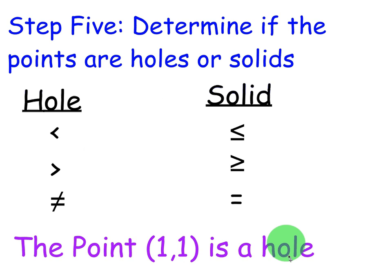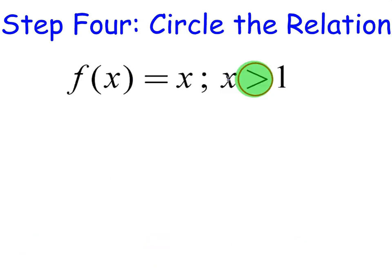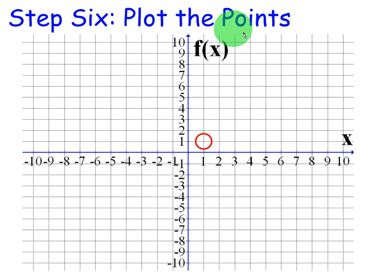So the point 1, 1 is going to be a hole because it's greater than, not greater than or equal to. Step 6 is to plot the points. So I will plot a hole at 1, 1, not a solid point. It's an important part of the graph though, so we need to put it there.